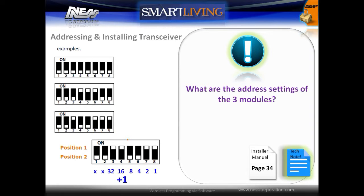Example 1 has all switches off and is classed as address 1. The next example has switches 4, 5 and 6 on, which equals 28 plus 1, equals address 29. The last example has switches 3, 6, 7 and 8 on, which equal 39. Adding 1 gives address 40.